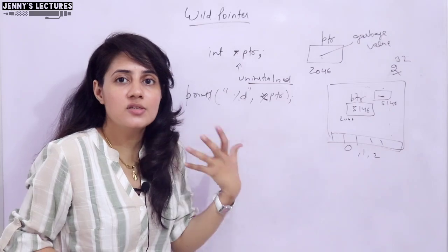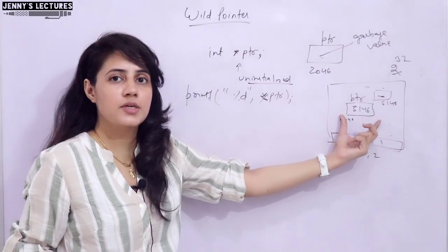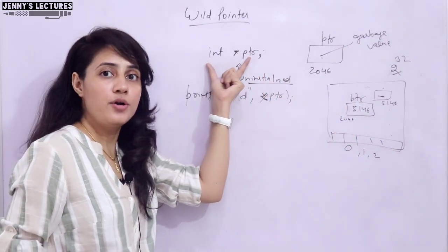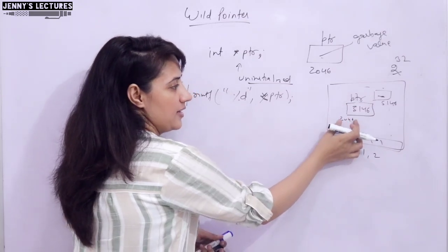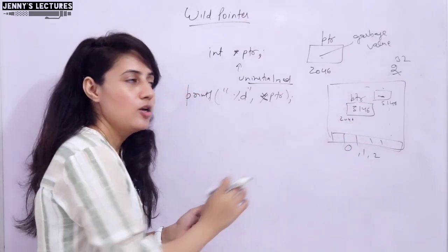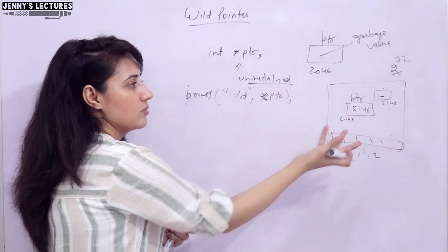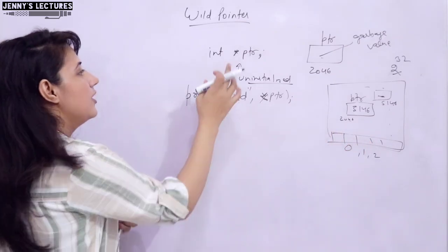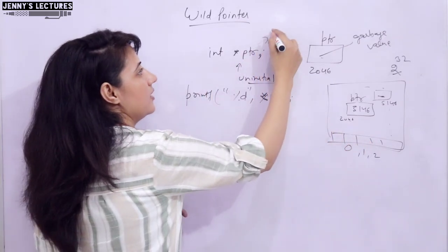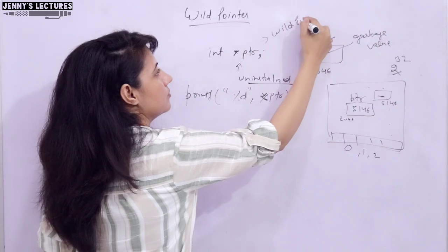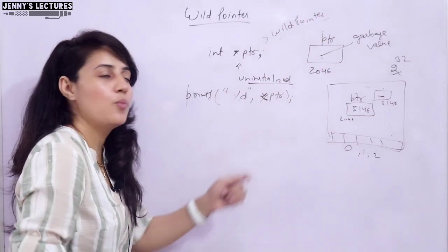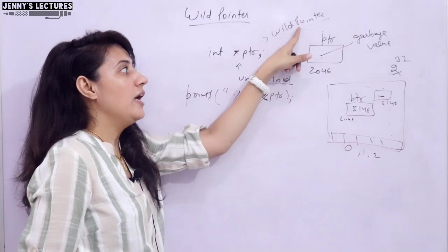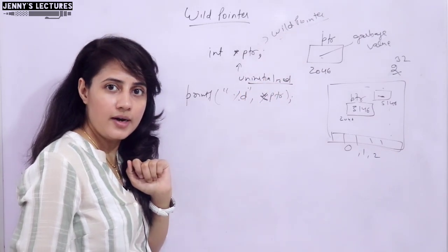It's like invalid for us. We have just reserved these four bytes because we have just declared a pointer. So now this memory is reserved for us having a base address 2046. So it will give some garbage value, or maybe your program will crash. So this pointer you can say is acting as a wild pointer. Now you can say this is uninitialized pointer. So if a pointer is uninitialized, that will act as a wild pointer.